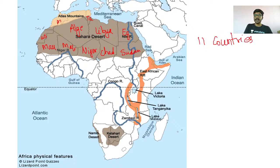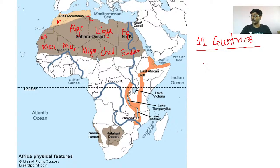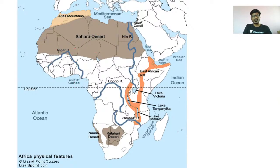Sahara Desert is not in Nigeria. After that, what you need to remember is this is the Niger River. It originates and flows through Mali, then Niger, then Nigeria, and then into the Gulf of Guinea.